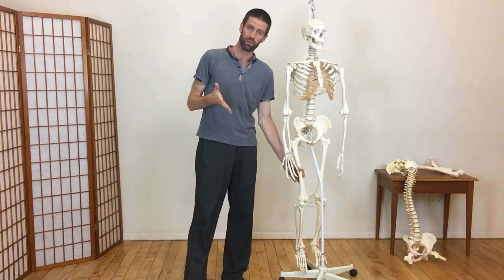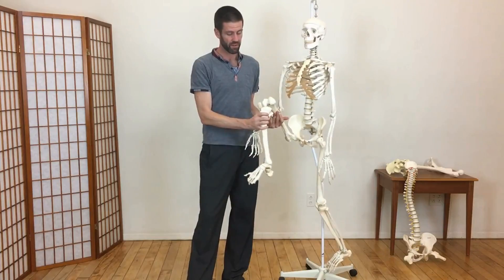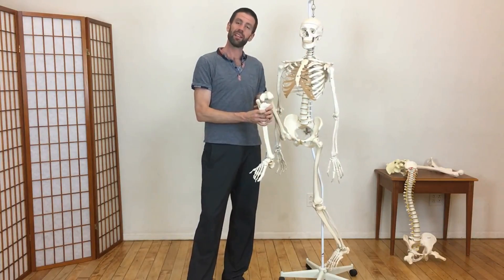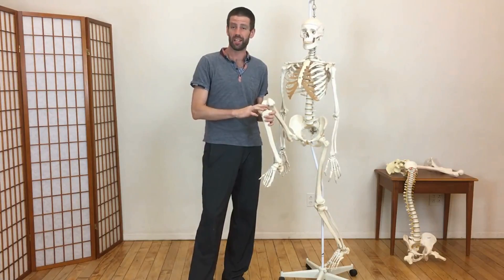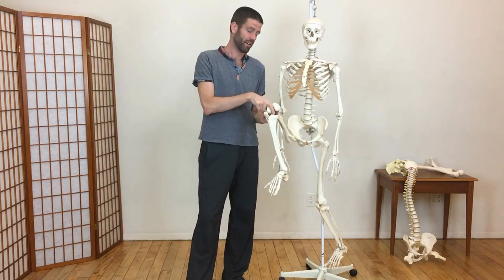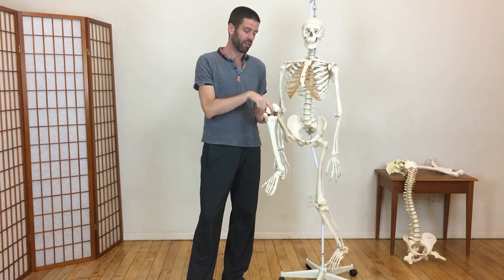So, how does the tibial plateau actually hold the condyles of the femur? It's not completely flat. There are little grooves and then there's a little indentation in the center, which is going to fit inside this channel of the femur.